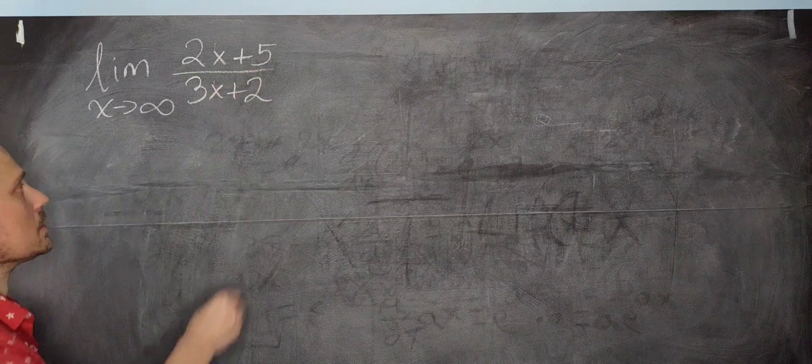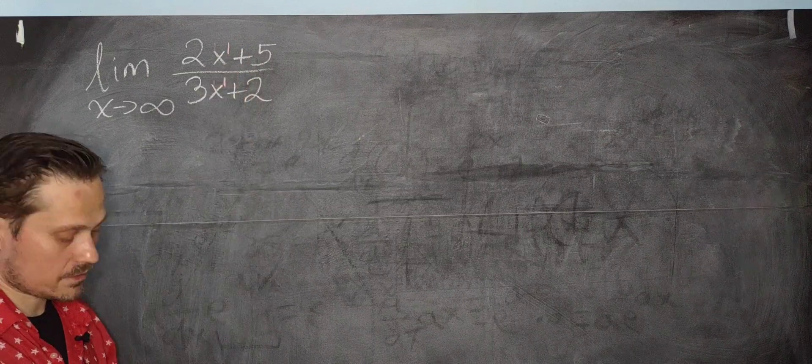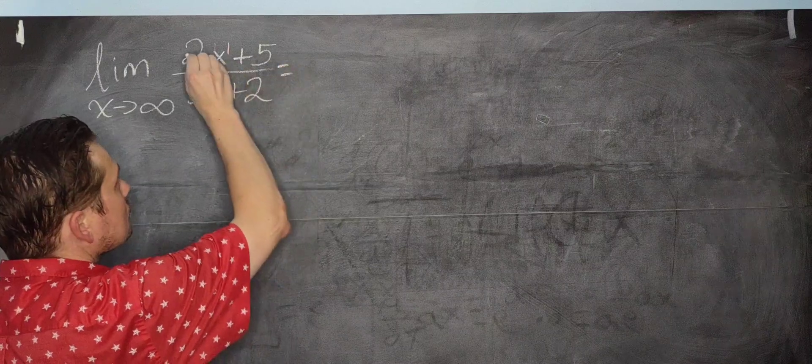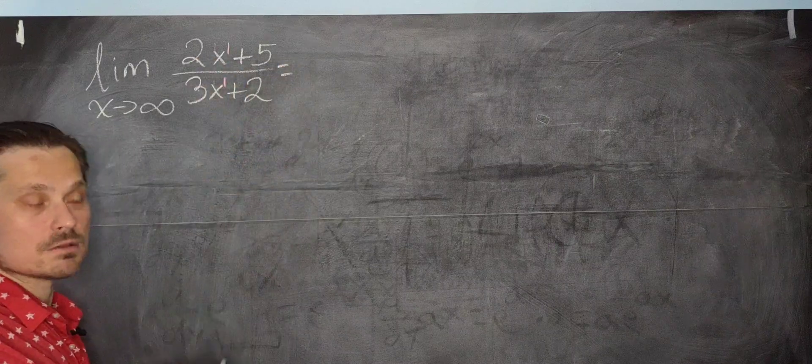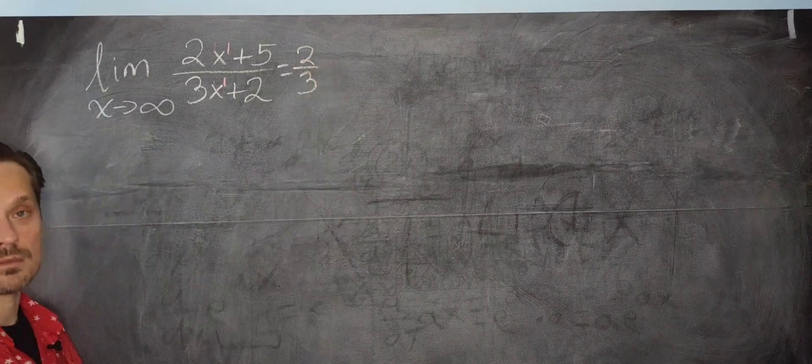So the first way to do it is to recognize that you have matching powers of x. This is x to the first and x to the first. In that case, the limit is simple. It's simply equal to the ratio of the leading coefficients, whatever they are. So in this case, it's 2 over 3, and that is the value of the limit.